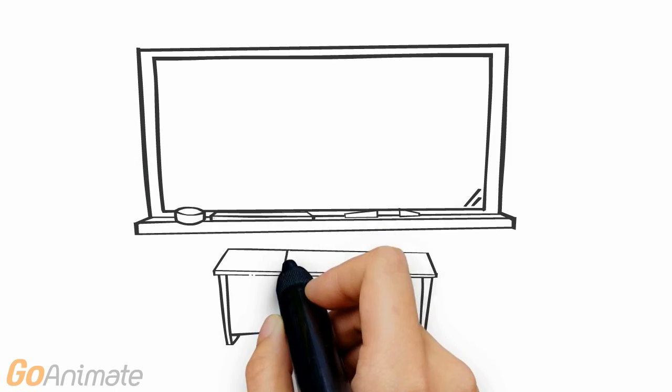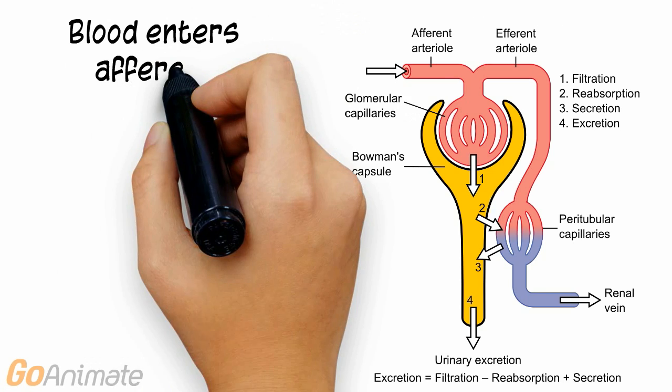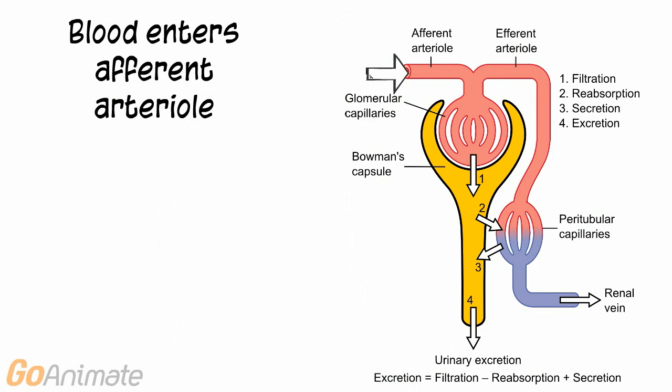Let's learn about tubular reabsorption and secretion. Let's begin by going over a few basic processes. The functional unit of the kidney is the nephron. The nephron makes urine.